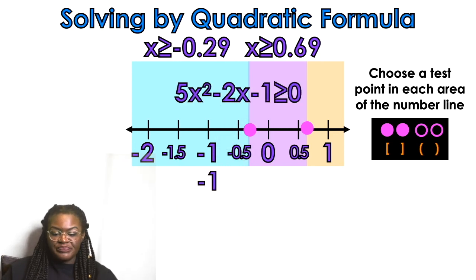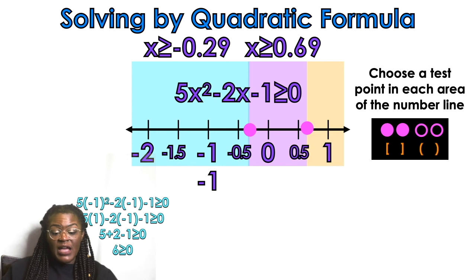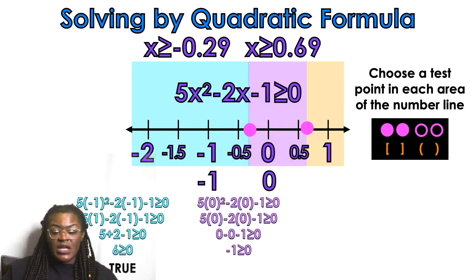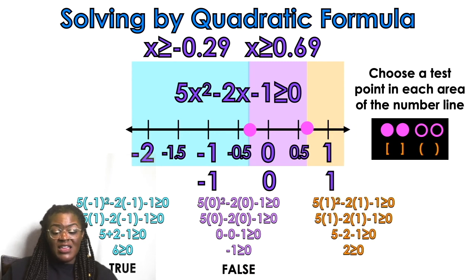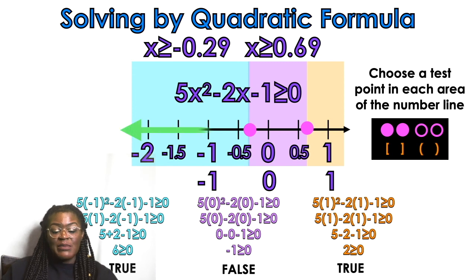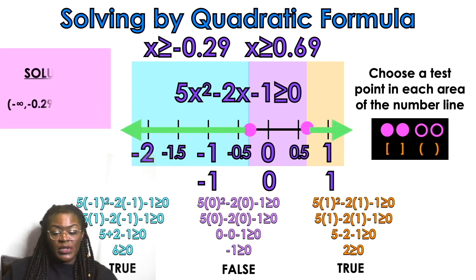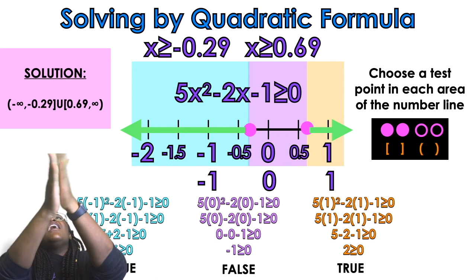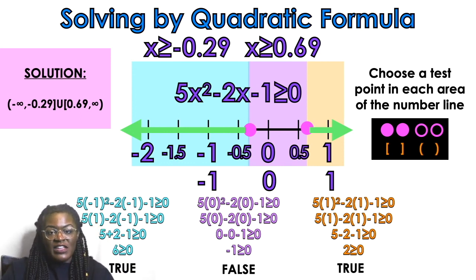We mark the blue, purple, and orange areas. Test point negative 1 in the blue area: true. Test point 0 in the purple area: false. Test point 1 in the orange area: true. So blue and orange work. The solution in interval notation is (−∞, −0.29] union [0.69, ∞) — brackets because we had 'greater than or equal to.' Give yourself a pat on the back!